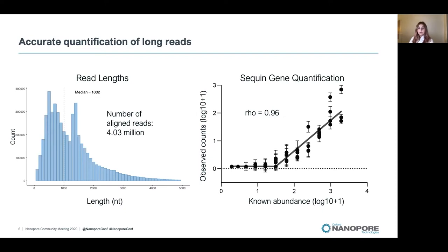On the left is a histogram of read lengths from the sequin and human RNA generated from direct RNA sequencing, with a median of approximately 1 kb. On the right is a segmented linear regression comparing the known and observed sequin gene counts. Using the sequin controls, we found that direct RNA quantified sequins accurately, with a Spearman's rho of 0.96 at the gene level and 0.91 at the transcript level.